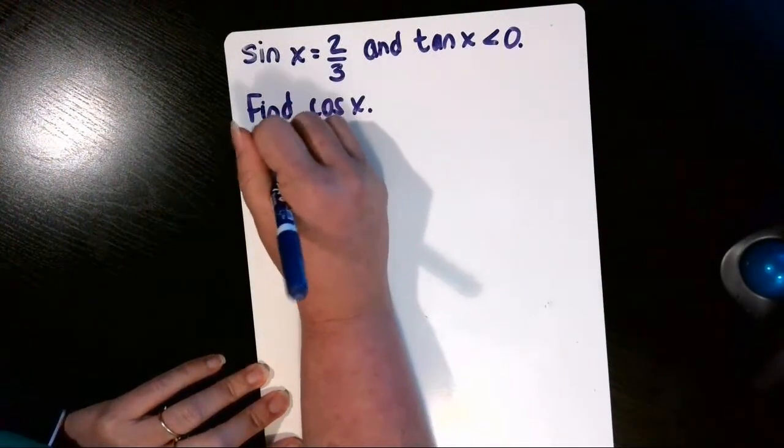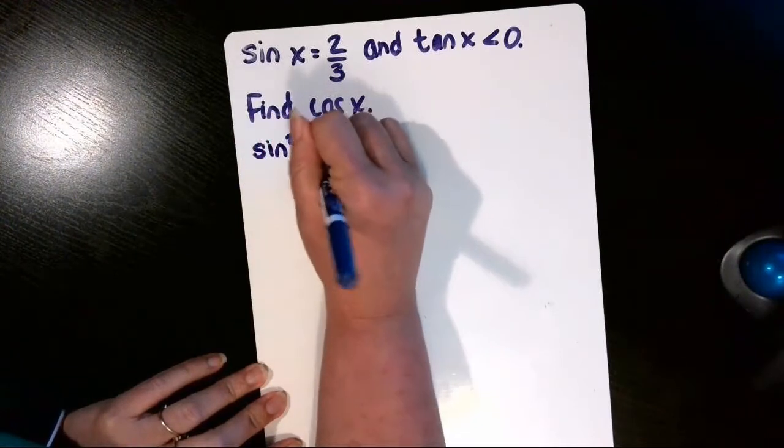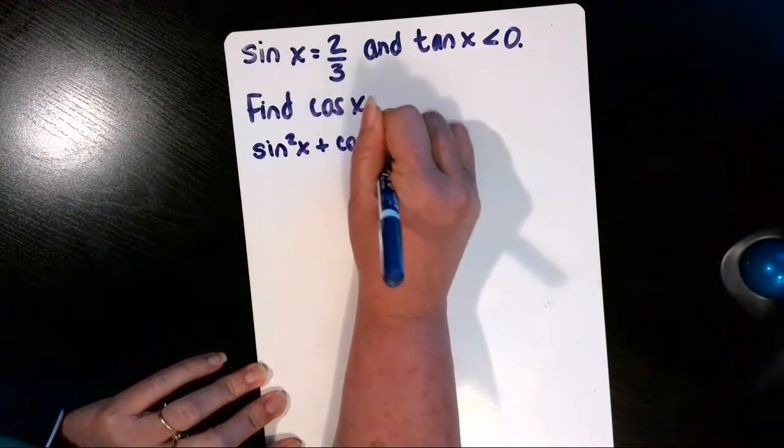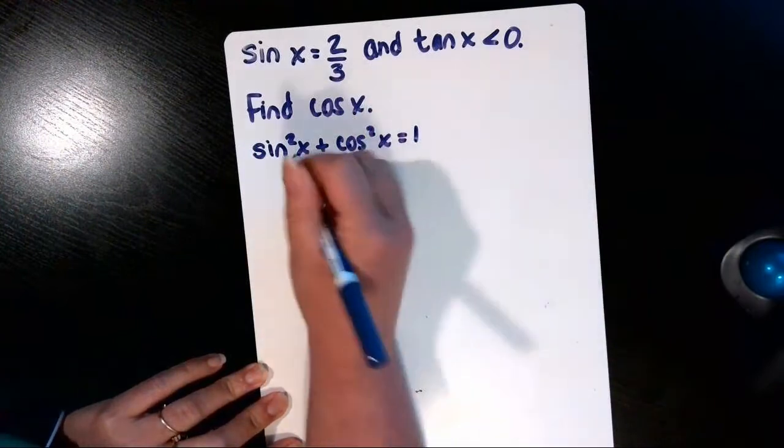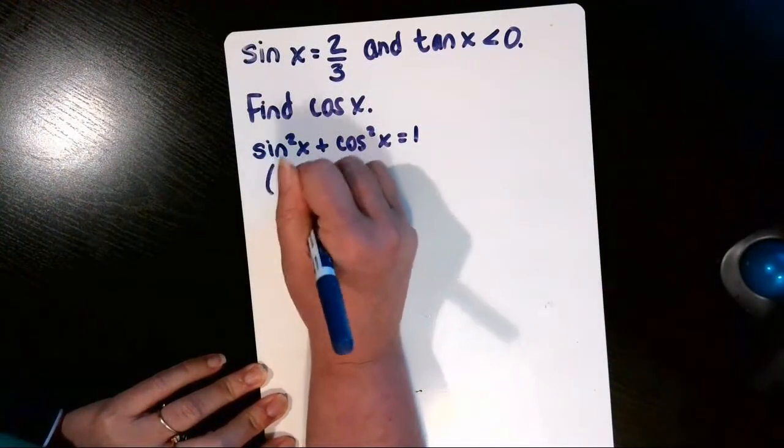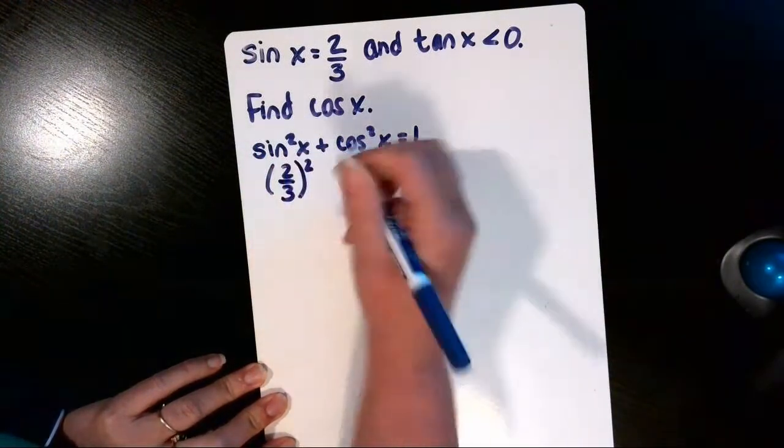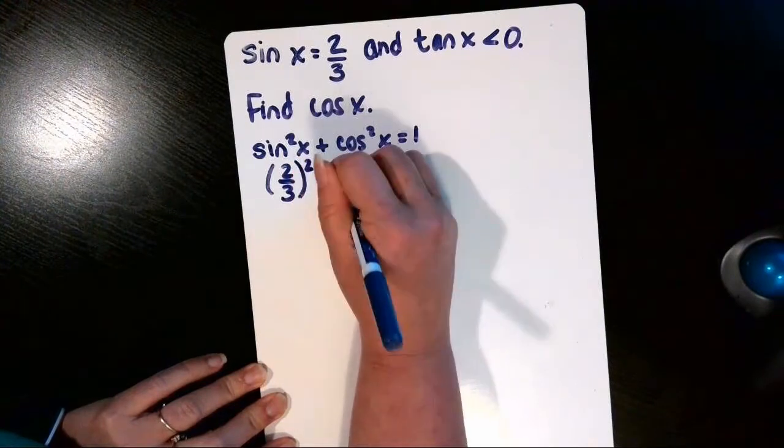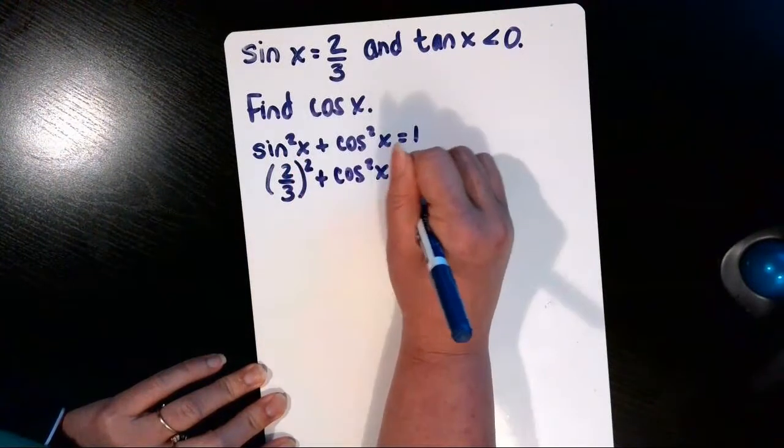So we're going to use a Pythagorean identity: sin²x + cos²x = 1, and substitute in 2/3 for the sine. Then we'll square that, plus the cosine squared x equals one.